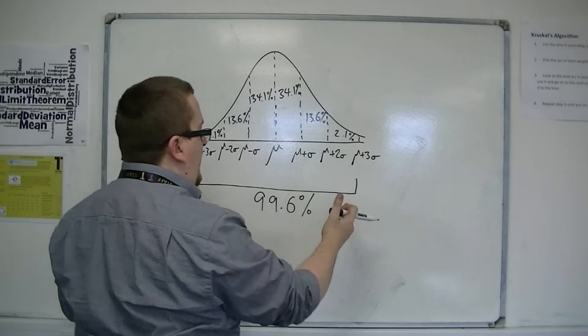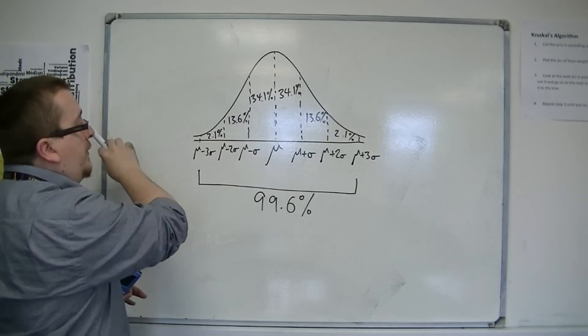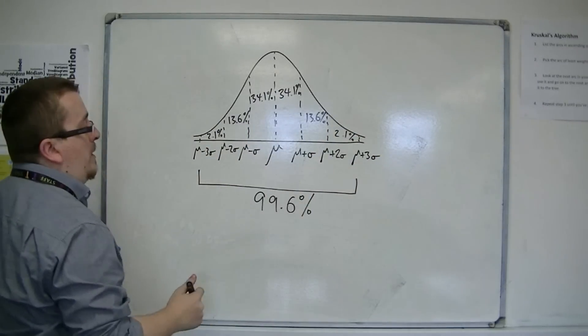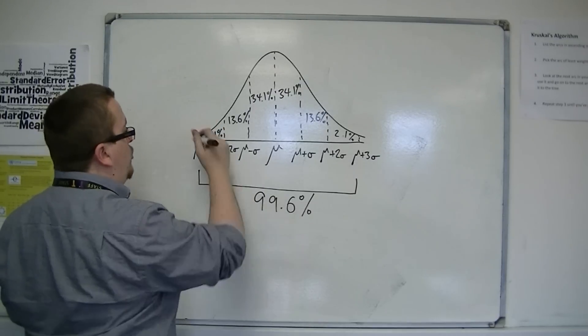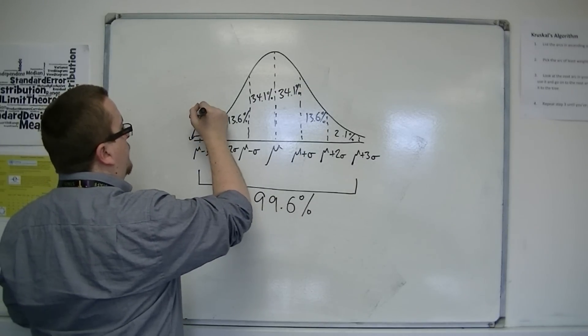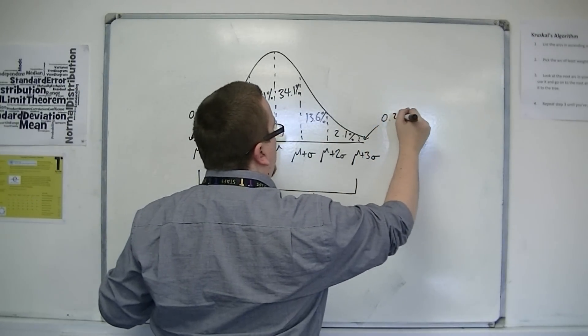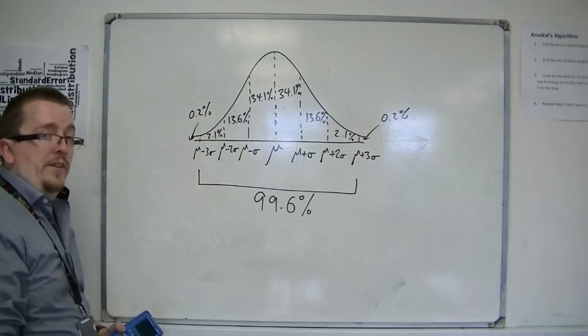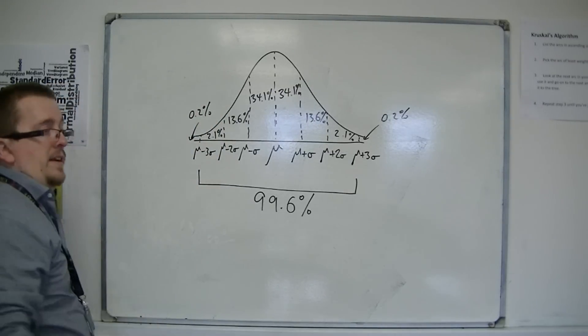So the majority is there. There is a small percentage either side that makes up these two parts. So we'd be looking at 0.2 of a percent each. So not very much. But that 0.2% goes all the way up to infinity, and that 0.2% goes all the way up to minus infinity.